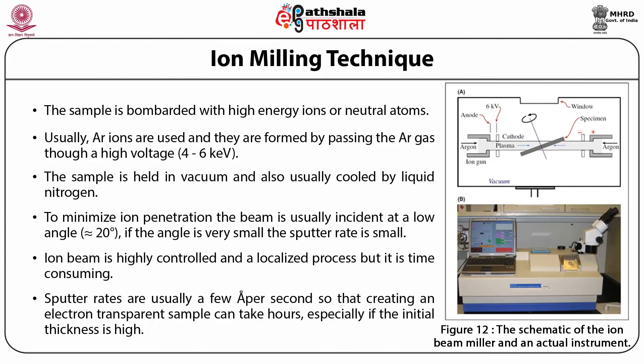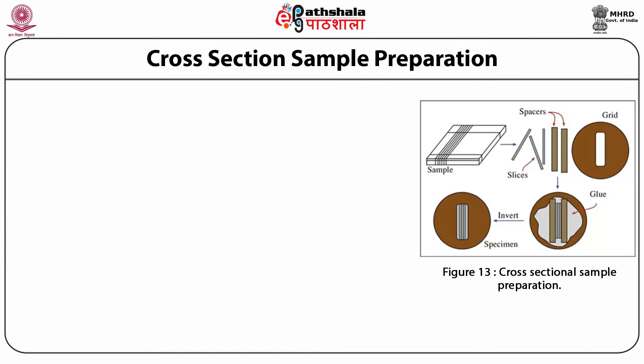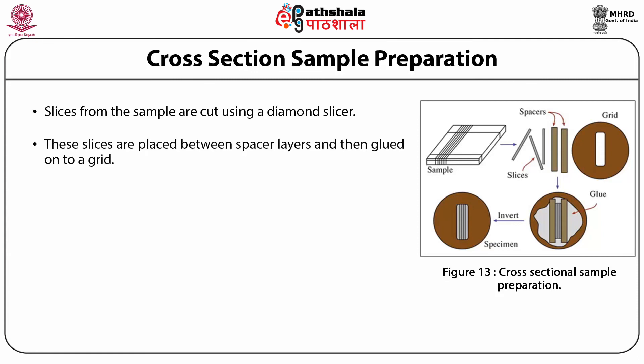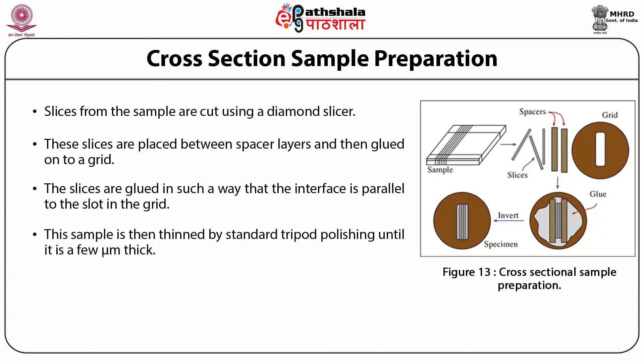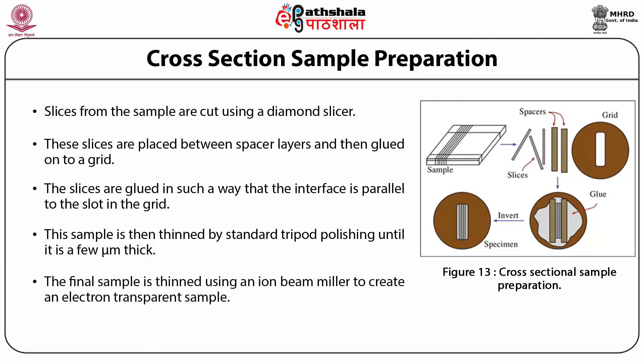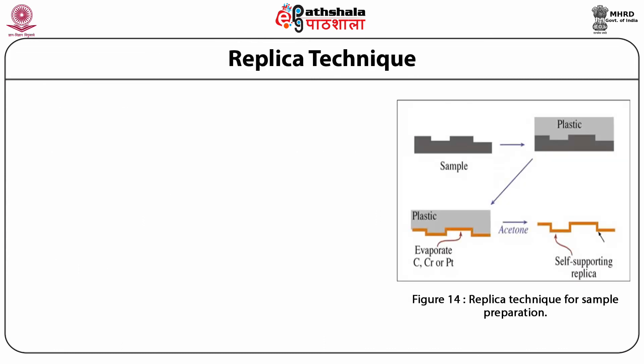We next study cross-sectional sample preparation. Slices from the sample are cut using a diamond saw. These slices are placed between spacer layers and glued onto a grid such that the interface is parallel to the slot in the grid. The sample is then thinned by standard tripod polishing until it is a few microns thick. The final sample is thinned using an ion beam miller to create an electron-transparent sample. The cross-sectional sample preparation is also shown in the figure.